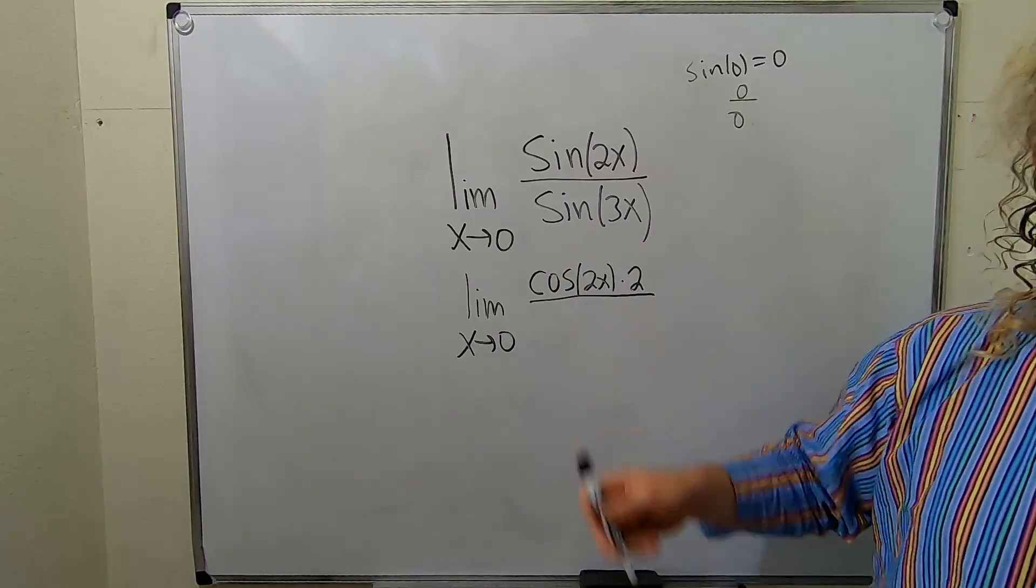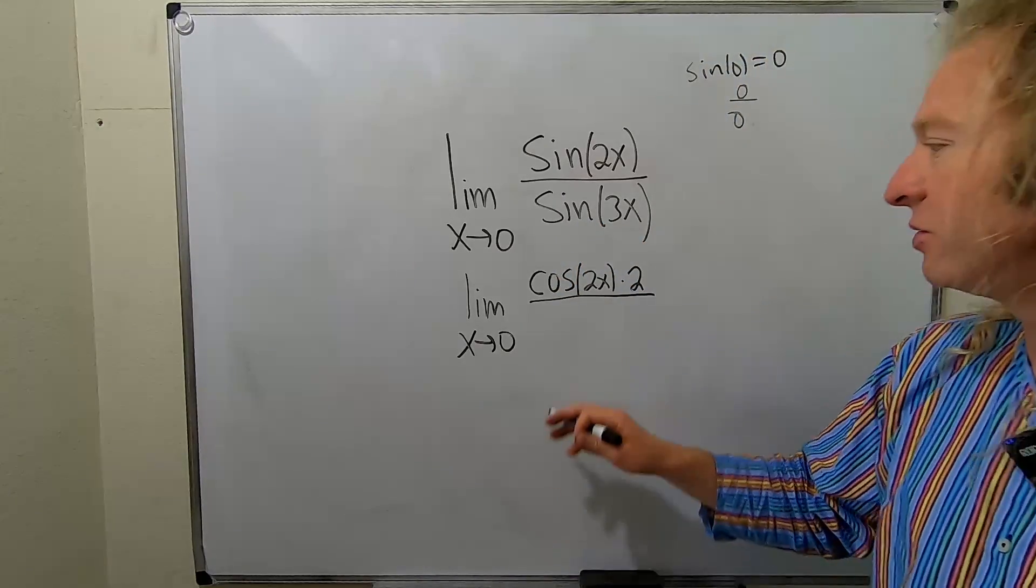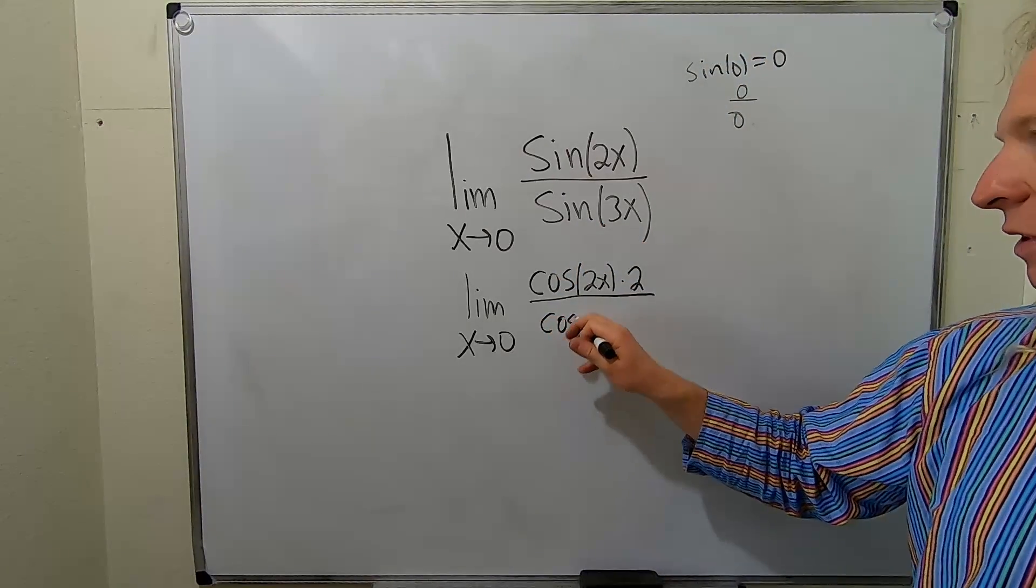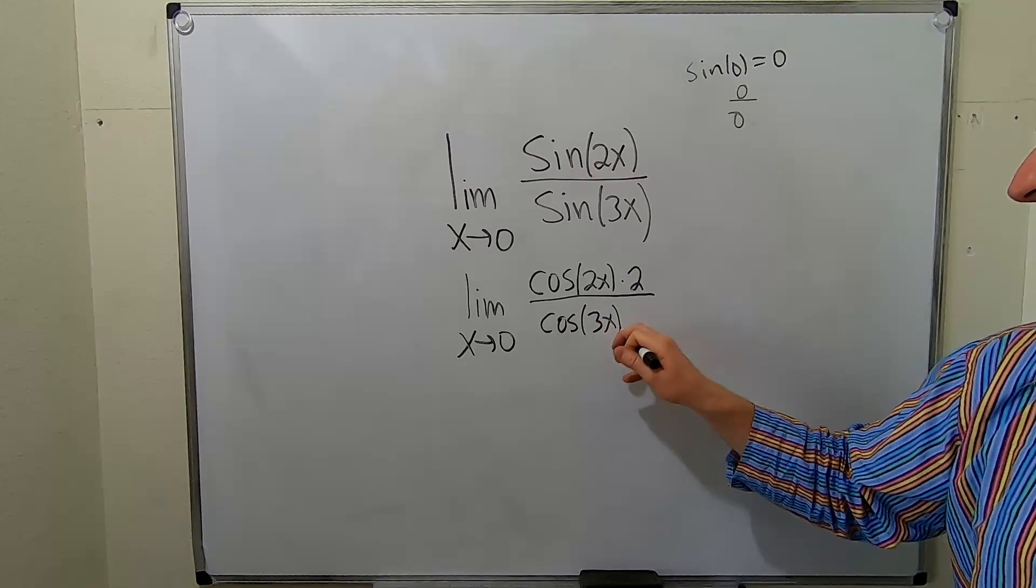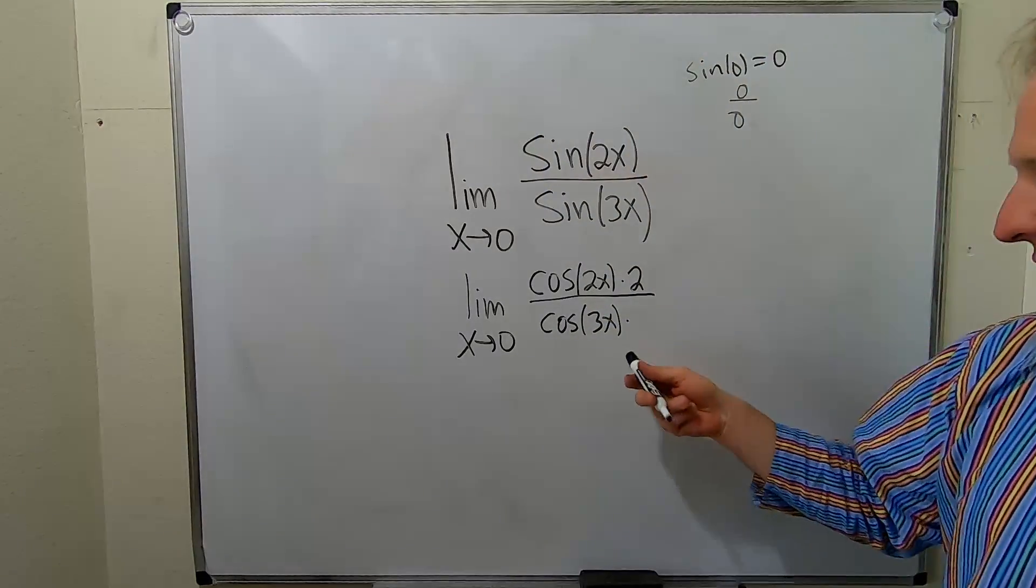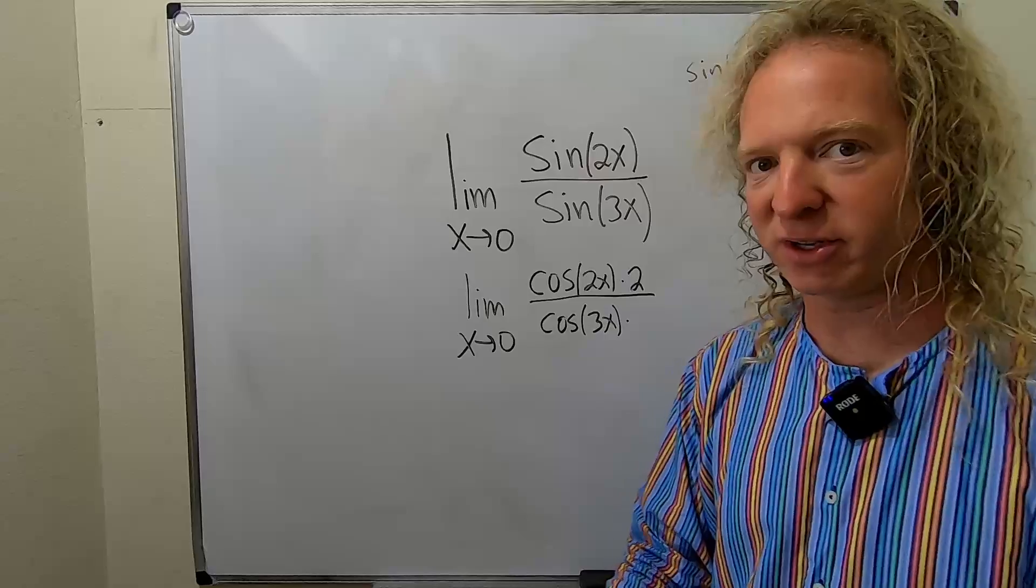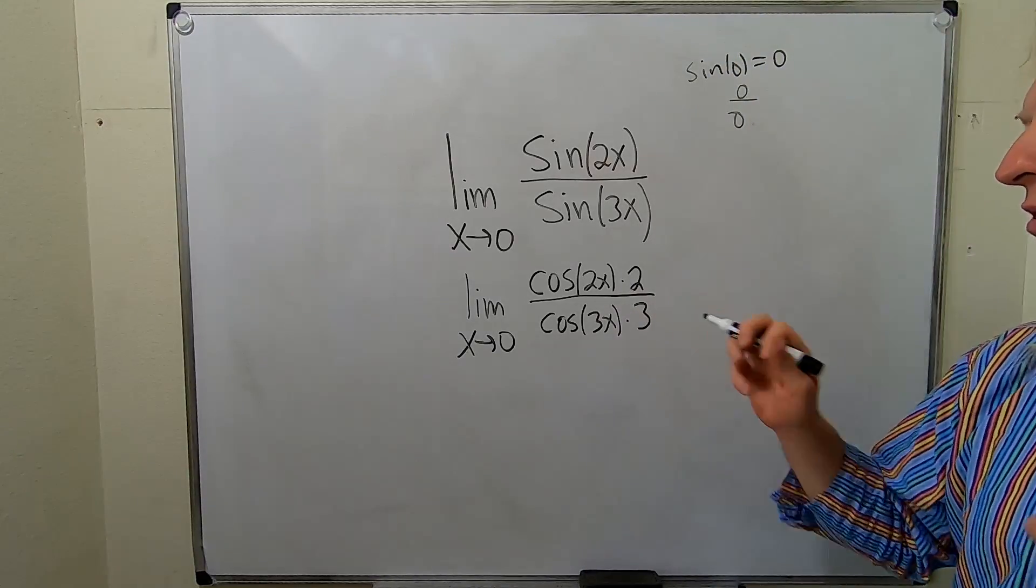Over, and then here, same thing. Derivative of sin is cosine. So, this is cosine of 3x times the derivative of the inside. The inside piece is 3x. So, its derivative is 3. Beautiful stuff.